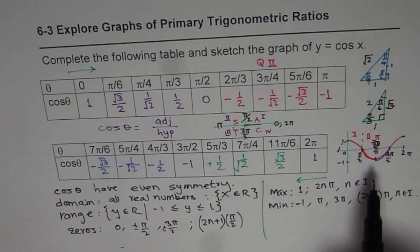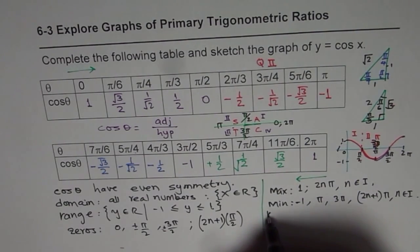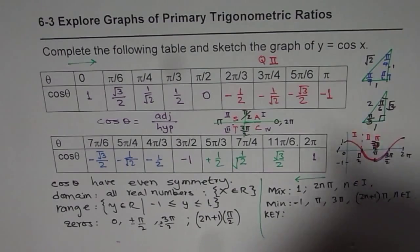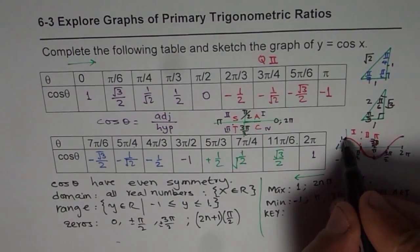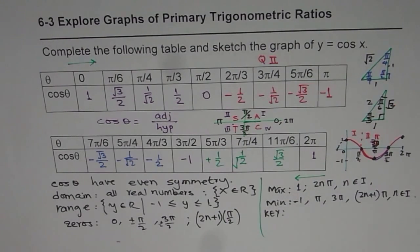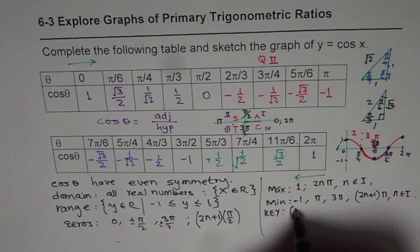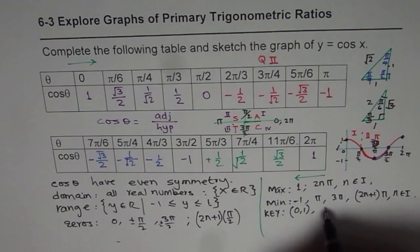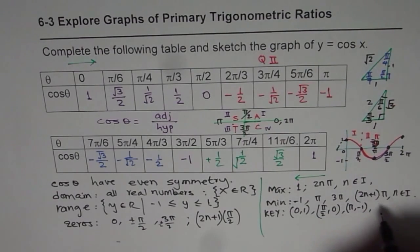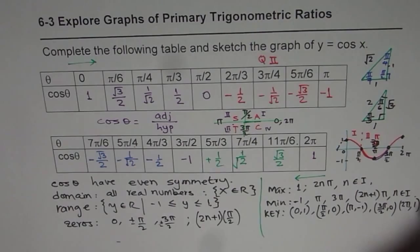One more thing to highlight: the key points for sketching the cosine function are five values. At 0 you have 1; at pi by 2 you have 0; at pi you have minus 1; at 3 pi by 2 it is 0; and at 2 pi it is 1. These are the key values for the cosine function.